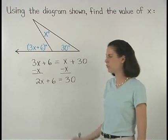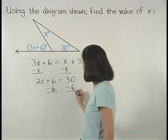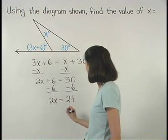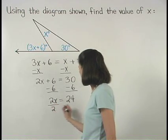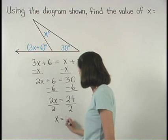And subtracting 6 from both sides gives us 2x equals 24. And dividing both sides by 2, we find that x equals 12.